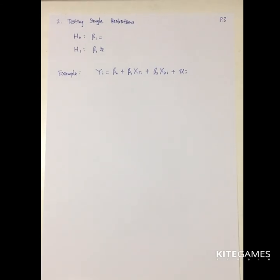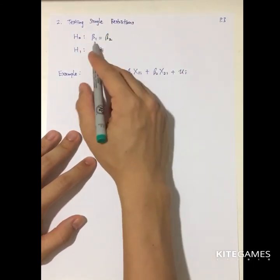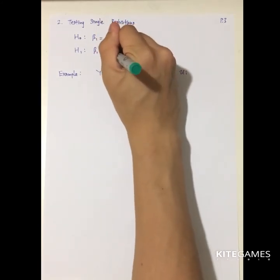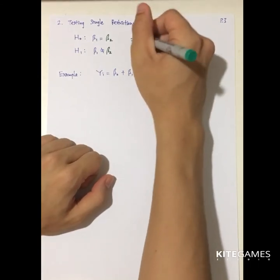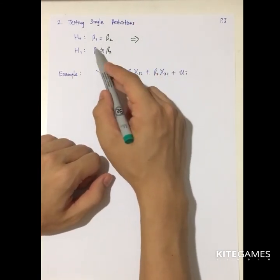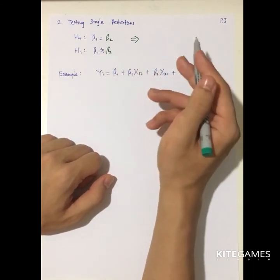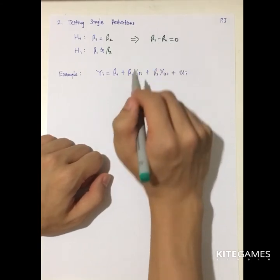We need to do one more hypothesis test. Sometimes you are not just testing whether beta1 or beta2 equals zero. Sometimes you want to test whether beta1 is equal to beta2 — that means the partial effect of X1i equals the partial effect of X2i. The alternative hypothesis is that beta1 is not equal to beta2. So how can we do this hypothesis testing?